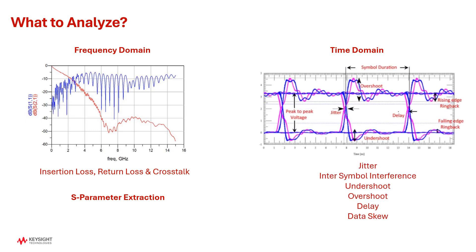In the time domain, we analyze our eye diagram. In the eye diagram we usually look for jitter, inter-symbol interference, undershoot, overshoot, delay and data skew. We observe the eye diagram by performing end-to-end channel simulation, which includes your transmitter, your channel or interconnect, and your receiver intact.